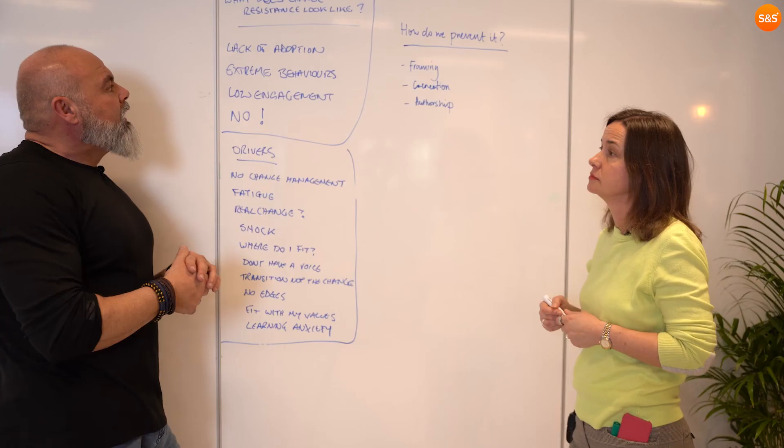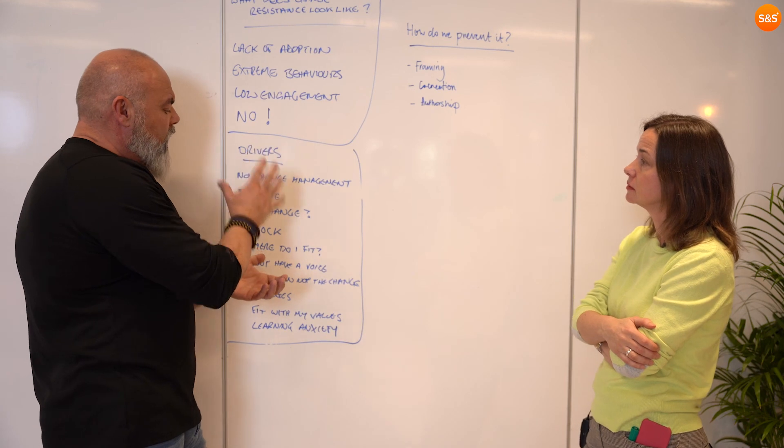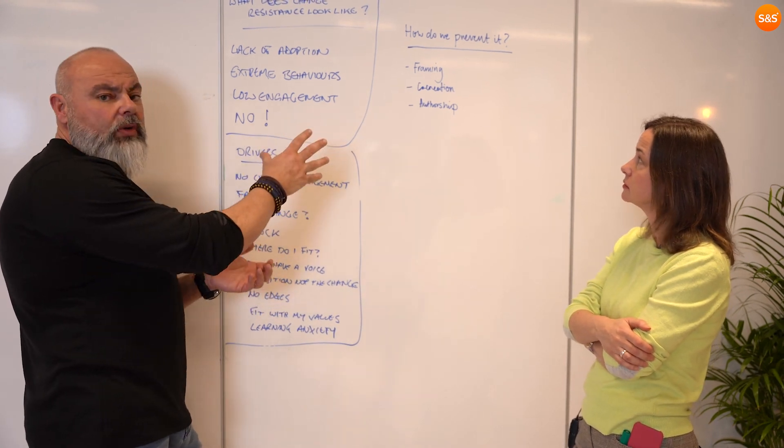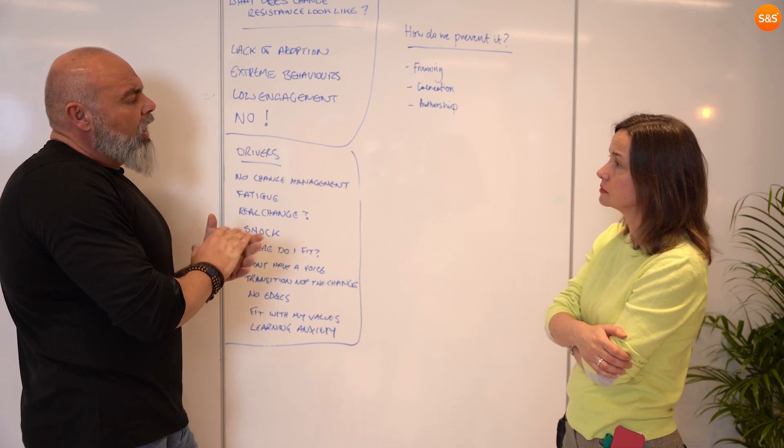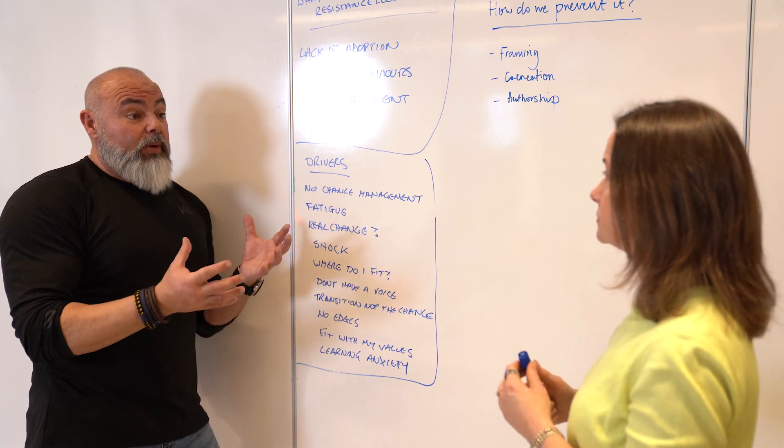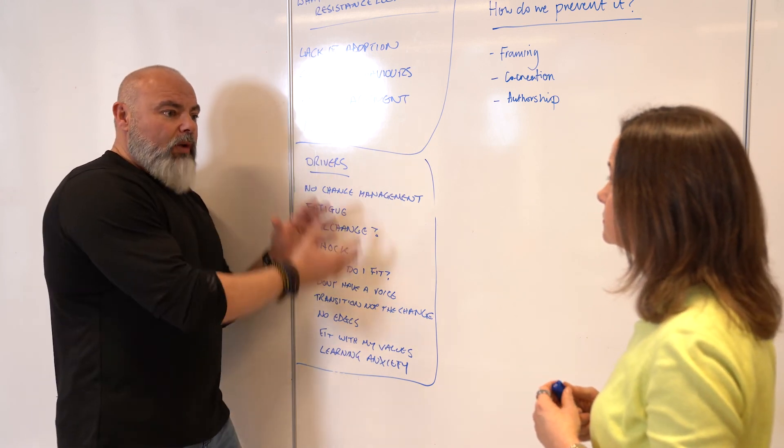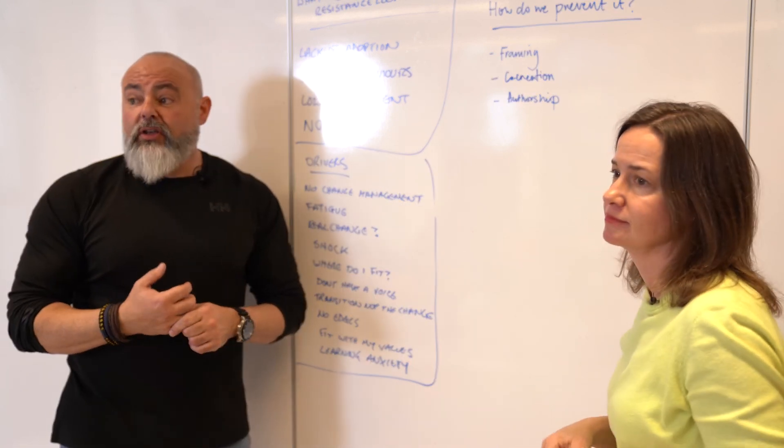Brilliant. We talked a little bit about what change resistance looks like, some of the things that are causing it to happen, and then some of the ways in which we can improve that and prevent it happening in the first place. Thank you very much, Jacks. In part two, we're going to explore a little bit about what we can do if we haven't got everything prepared up front and it is there in front of us. What can we do? Okay, that's good. See you in part two.